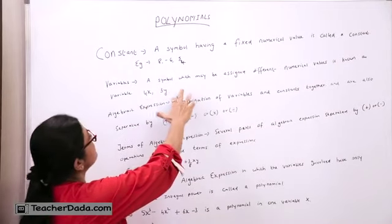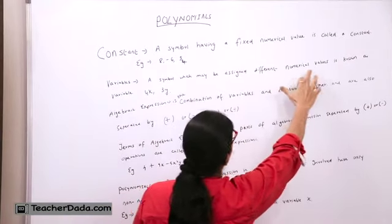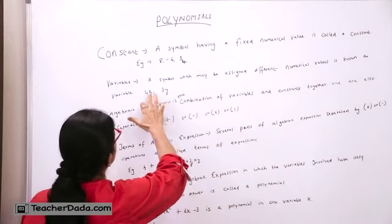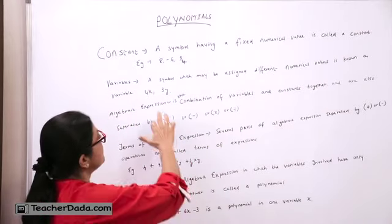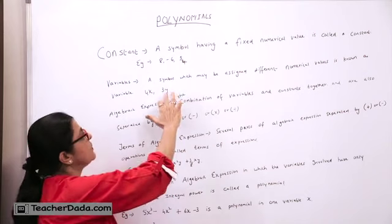The second thing is variable. A symbol which may be assigned different numerical values is known as variable. So 4X, your variable is X. 3 times Y, variable is Y.